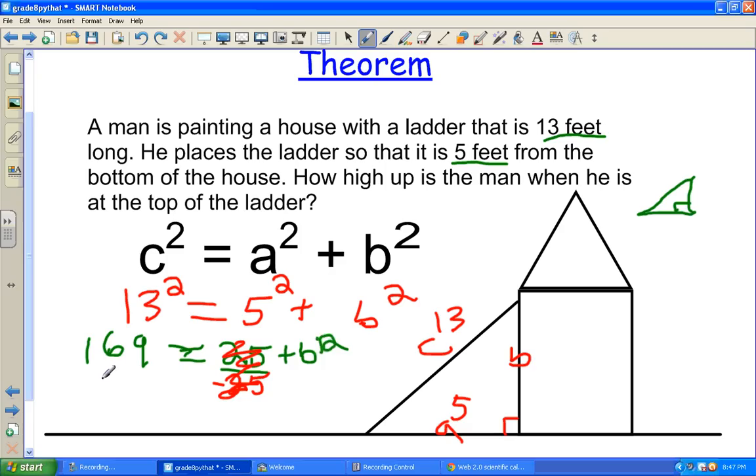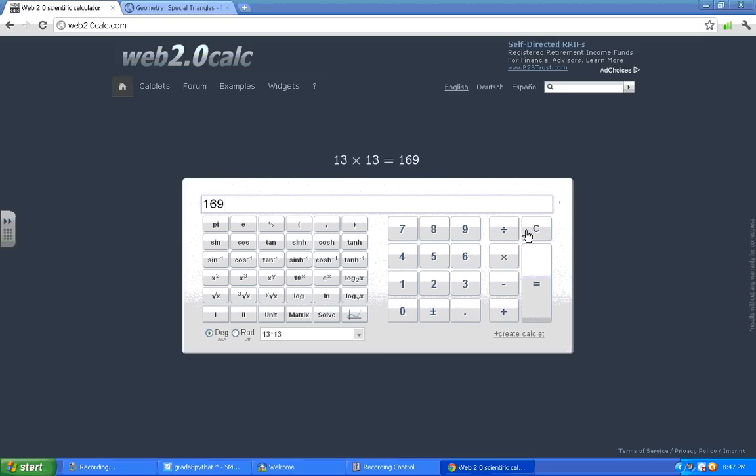But if we do it to one side of the equation, we must do it to the other side. So we'd better take away 25. So 169, and let's take away 25. And the answer is 144.